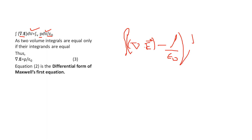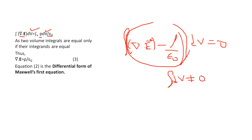Since the integral of dV cannot be zero, what must be zero is the integrand: del dot E minus rho by epsilon-naught equals zero. Therefore, del dot E equals rho by epsilon-naught. This is equation 3, the differential form of Maxwell's first equation or Gauss's law in electrostatics in differential form.